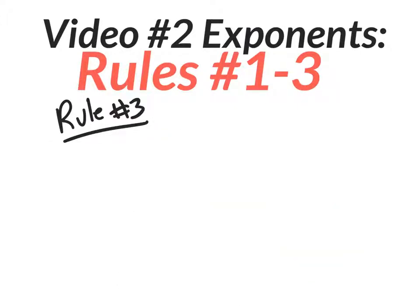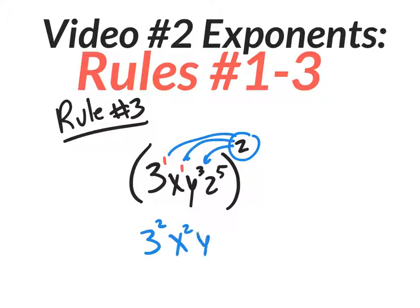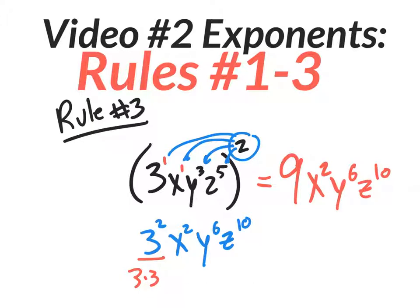Rule three is the one that gets a little challenging. Rule three is where you have parentheses with an exponent on the outside, like three x y to the third z to the fifth, all raised to a power. When you have a monomial on the inside — no addition or subtraction — with an exponent on the outside, you distribute that outside exponent to each and every inside exponent, and when you have a power to a power, you multiply. There's an invisible one on the three and on the x. Two times one gives three squared, two times one gives x squared, two times three gives y to the sixth, two times five gives z to the tenth. Three squared is nine, so your final answer is nine x squared y to the sixth z to the tenth.